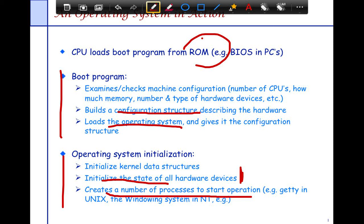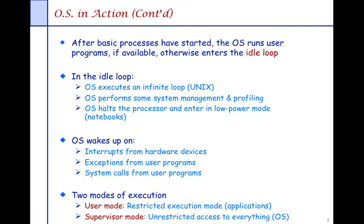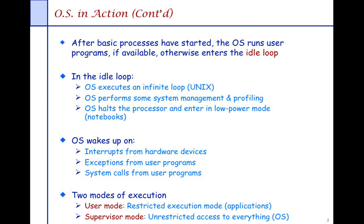Once initialization is done, the OS starts creating processes. A process is the vessel of execution — any application that wants to run has to run within a process. Once all hardware is initialized and processes are started, applications can interact with the hardware. The OS then runs a user program if one is available; otherwise it just enters an idle loop.